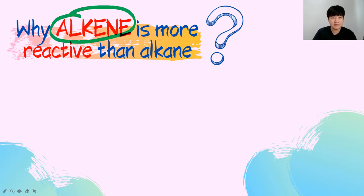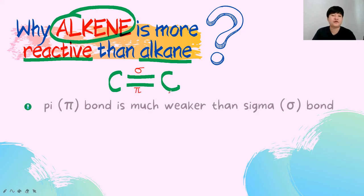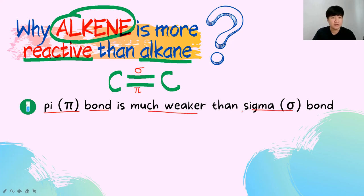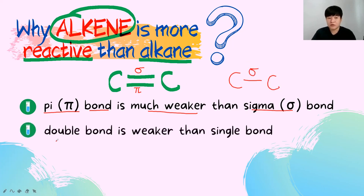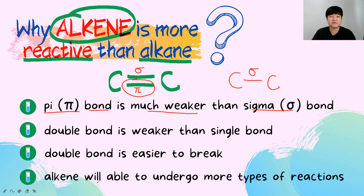Alkenes are a lot more reactive than alkanes. In alkenes, the carbon-carbon double bond contains a sigma bond and a pi bond. The pi bond is much weaker than the sigma bond. Compared to the carbon-carbon single bond which only has a sigma bond, the double bond is weaker overall because the pi bond is much easier to break.